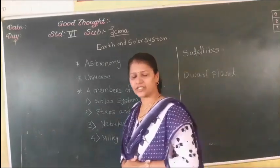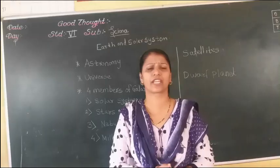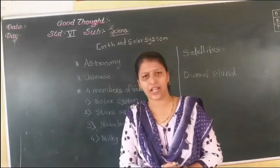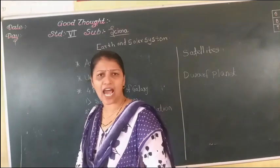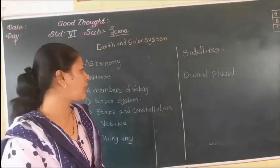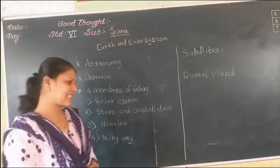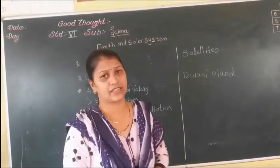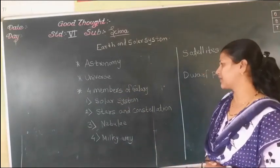The Universe is nothing but a space which is filled with millions of galaxies, planets, and solar systems. It consists of millions of galaxies and stars. That is called the Universe.